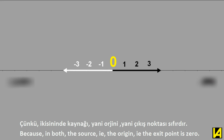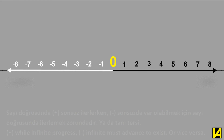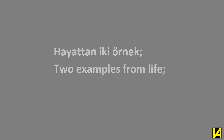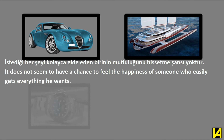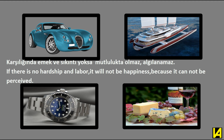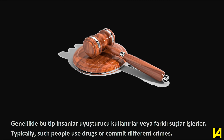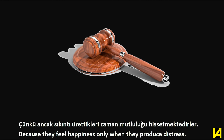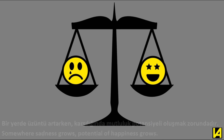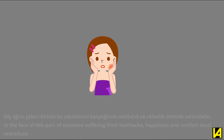The origin — the exit point — is zero. For infinite progress to exist, infinite must advance, or vice versa. The sum of everything that exists in the universe is neuter, by means zero. As an example from life: someone who easily gets everything he wants does not seem to have a chance to feel happiness. If there is no hardship and labor, there will be no happiness because it cannot be perceived. Typically such people use drugs or commit different crimes because they feel happiness only then — they produce distress somewhere, and sadness grows potential happiness.